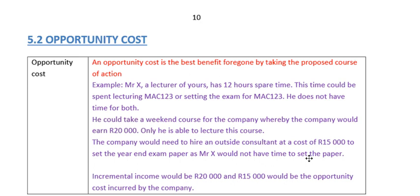So the incremental income is 20,000 rand, and the opportunity cost incurred by the company is 15,000 rand — because by choosing one outcome, they would incur costs of 15,000 rand with the other.